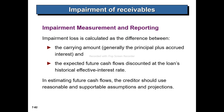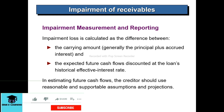Impairment measurement: the impairment loss is calculated as the difference between the carrying amount and the expected future cash flows discounted at the historically effective interest rate. The creditor should use reasonably supportable assumptions in projecting cash flows presented at present value. For example, $1,000 receivable discounted to present value.